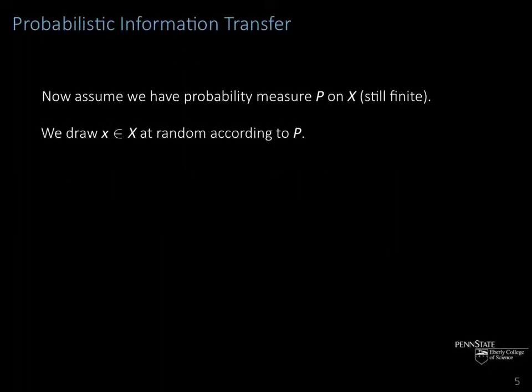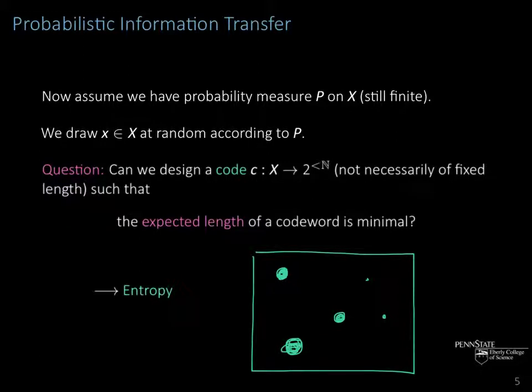What is usually done is to consider a similar question in the probabilistic setting. Now assume we have X, still our finite set, but with a probability measure μ on X, and we draw an element from X at random according to μ. Certain elements have higher probabilities, others have smaller probabilities. Can we use this information contained in the probability distribution μ to design a better code c—not necessarily fixed-length anymore—such that the expected length of a code word is minimal?